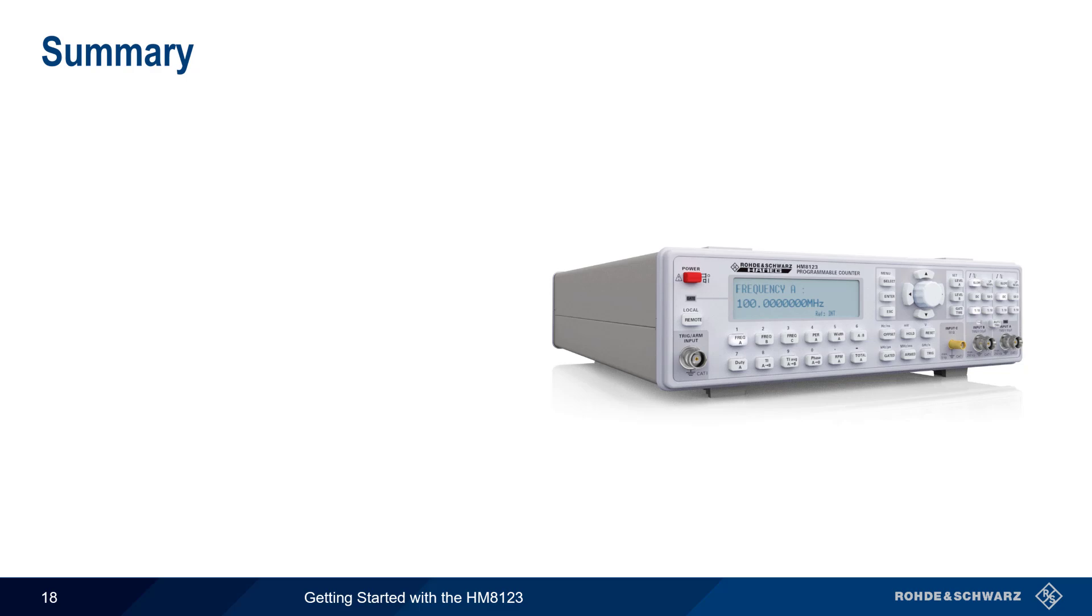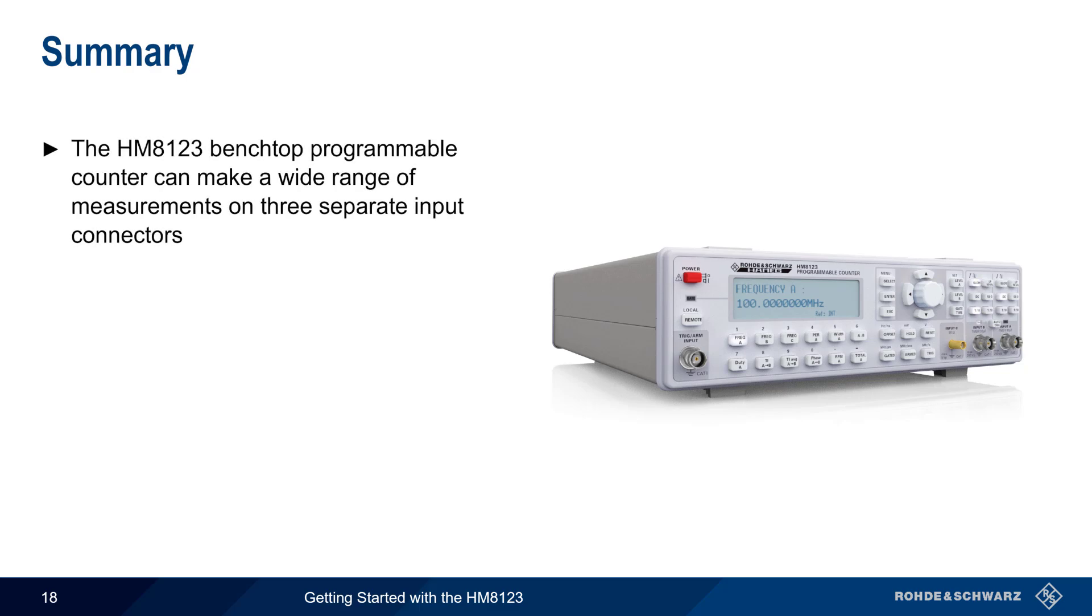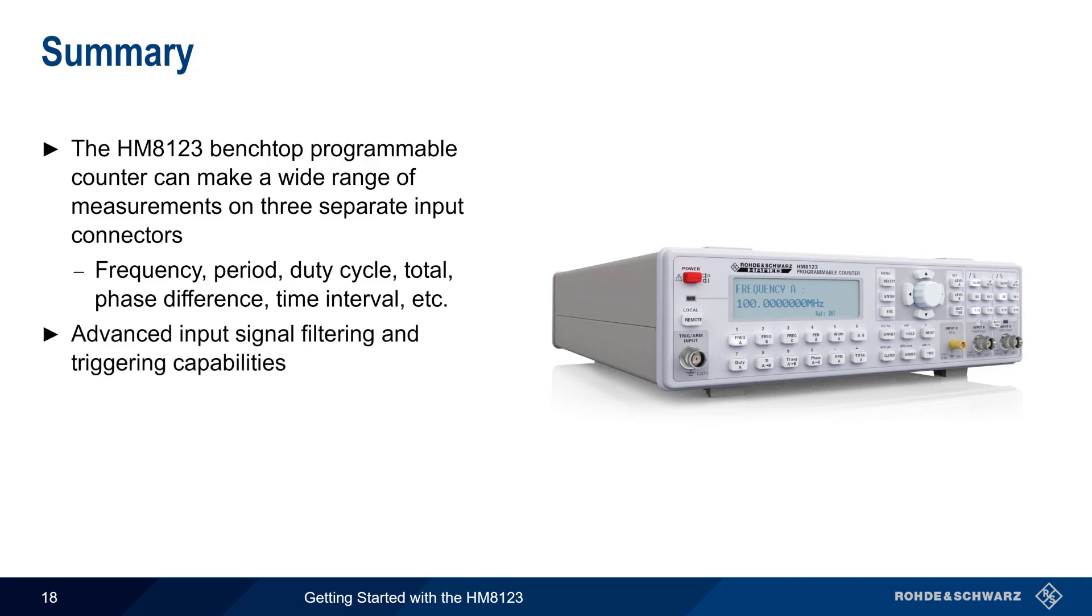Let's end with a brief summary. The Rohde & Schwarz HM8123 Benchtop Programmable Counter can make a wide range of measurements on its three separate input connectors. These include frequency, period, duty cycle, total, phase and time differences, etc. The 8123 also supports advanced filtering and conditioning of the input signal, as well as a variety of gating and triggering options. In addition, numerous external connectors can be used as inputs and outputs for triggering, gating, etc.